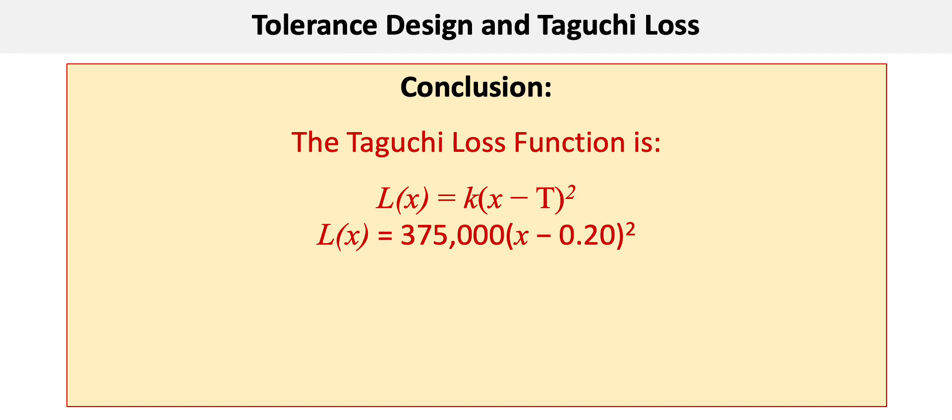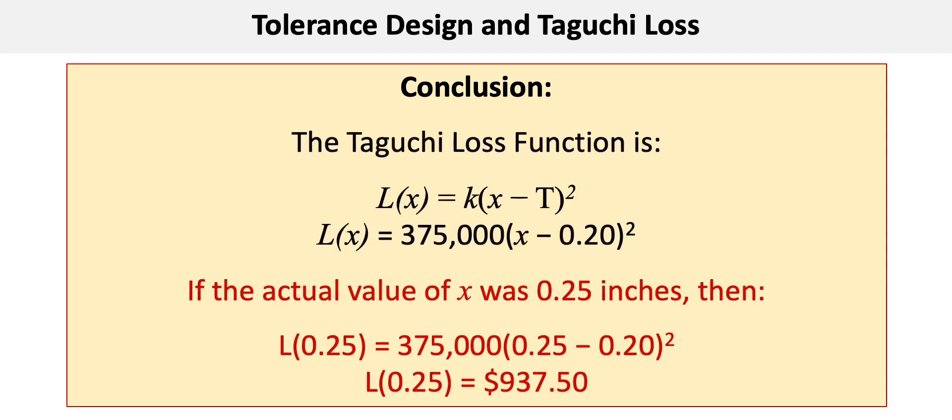This function can then be applied to any value of x. So for example, if x was 0.25 inches, then L at 0.25 would equal 375,000 times (0.25 minus 0.20) squared, to give a total cost of $937.50.